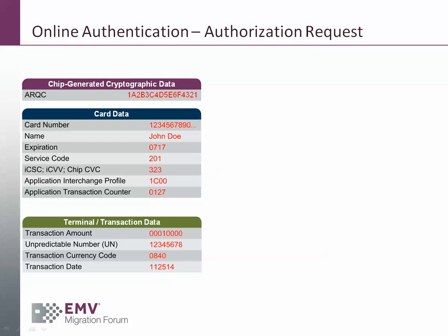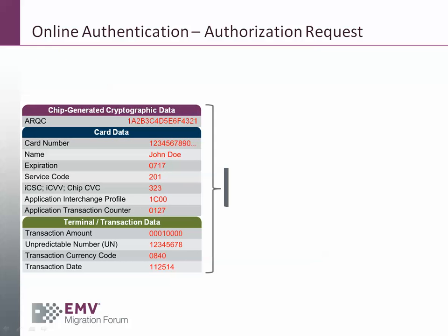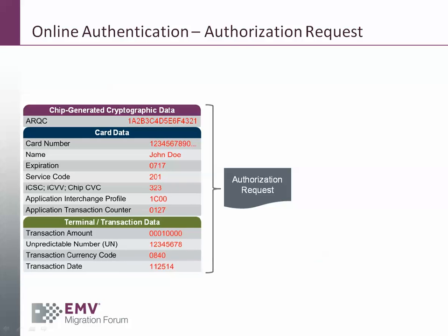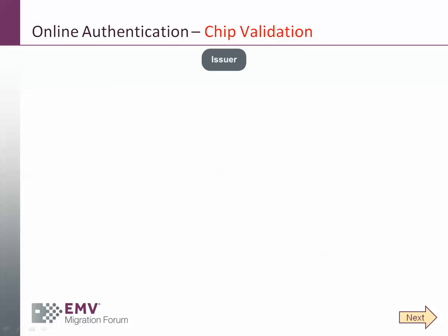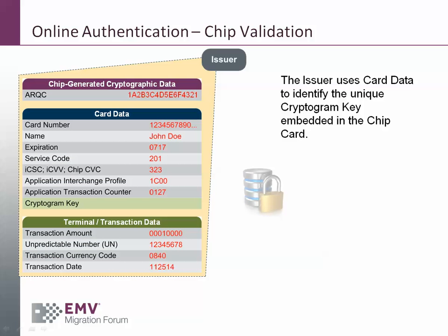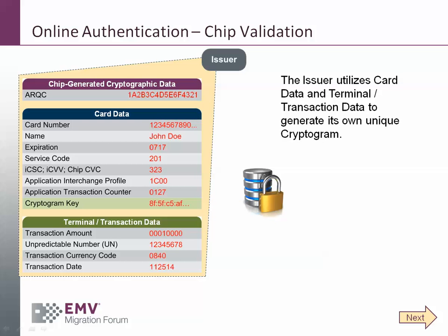The cryptogram key will now disappear from the request, and the remaining data elements will be combined into the authorization request, which is then sent to the issuer. At this stage, the issuer wants to validate the authenticity of the chip. The cryptogram key field is blank, so the issuer will use known card data to populate that cryptogram key. It will then use certain card data and terminal and transaction data to generate its own unique cryptogram.